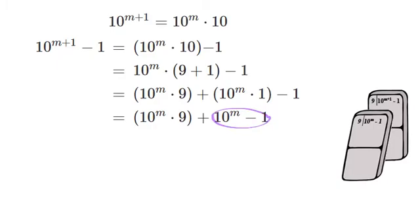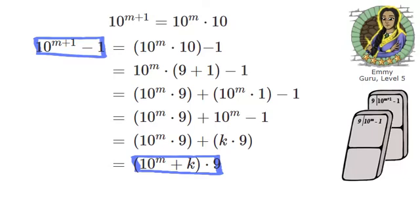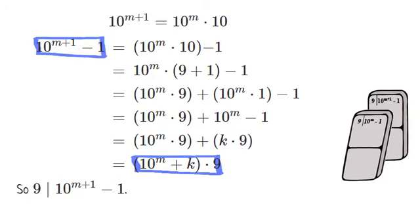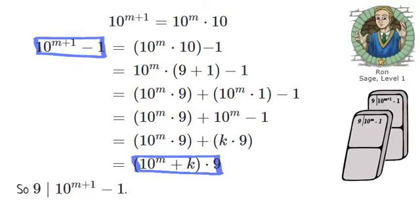We imagine that we knocked over the first domino which told us that 9 divides 10 to the power of m minus 1. In other words, for some whole number k, 10 to the power of m minus 1 equals k times 9. Then we can undistribute the 9. So 9 divides 10 to the power of m plus 1 minus 1.